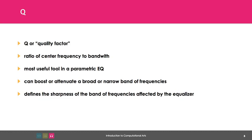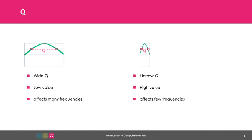Q defines the sharpness of the band of the frequencies affected by an equalizer. A low number widens the curve and affects more frequencies, while a higher number narrows the curve and affects fewer frequencies.